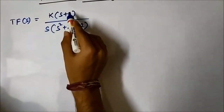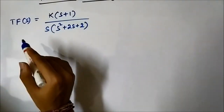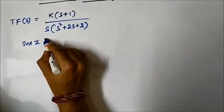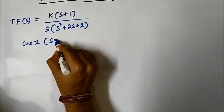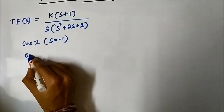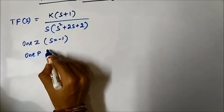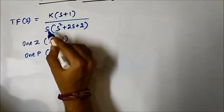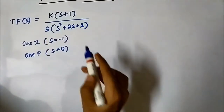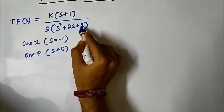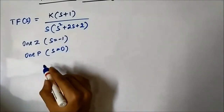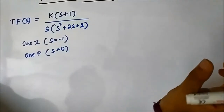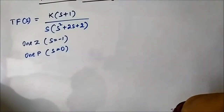Here we have one simple zero at s equals minus 1, one simple pole at s equals 0. The remaining denominator s²+2s+2 needs to be evaluated using the quadratic formula to determine the roots.